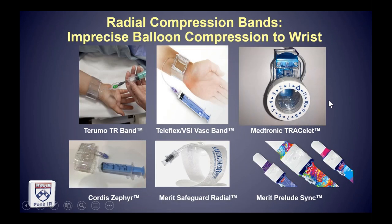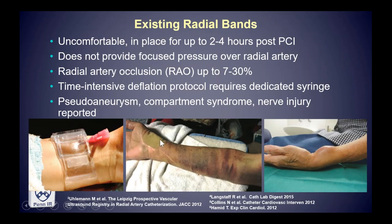You end up with an array of devices that are just balloons — so-called radial compression bands — inflatable balloons blown up with a syringe, with a Velcro pad that wraps circumferentially around the wrist. This applies pressure to the whole wrist, with a little more over the radial artery, and has become the de facto way of achieving hemostasis in these vascular territories. The problem is they're very uncomfortable — it's pressing the whole wrist, not a focused precise pressure over the radial artery. As a result, this long-segment radial artery occlusion has been associated with long-term radial artery occlusion in as high as 30% of patients.